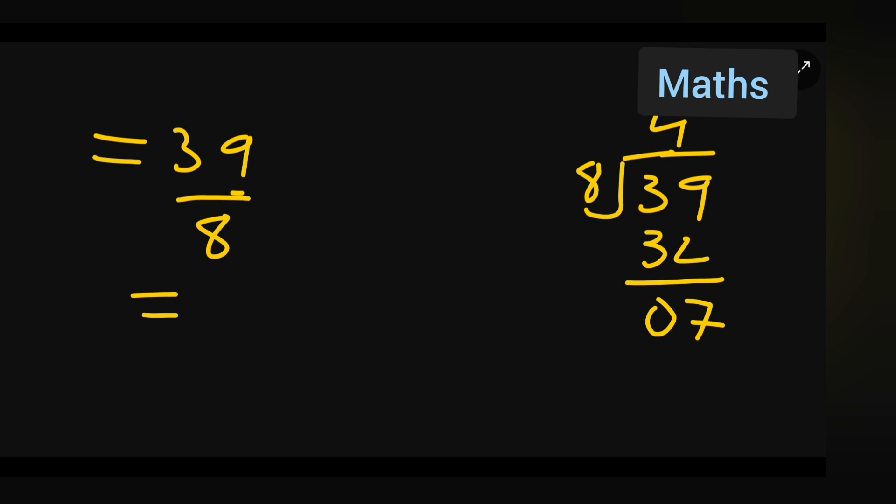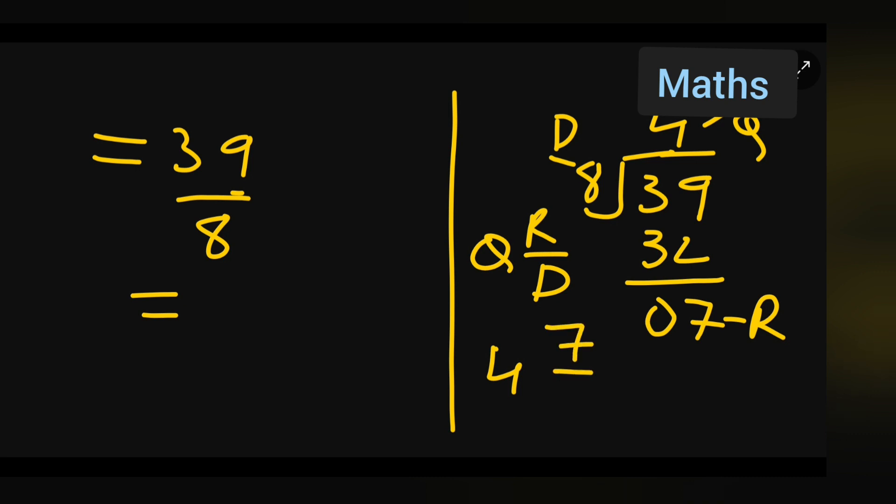So quotient remainder upon denominator. So this will be your quotient. This is your r and this is your d. So it will be 4. This is the r column. 4. Then 7 upon 8.